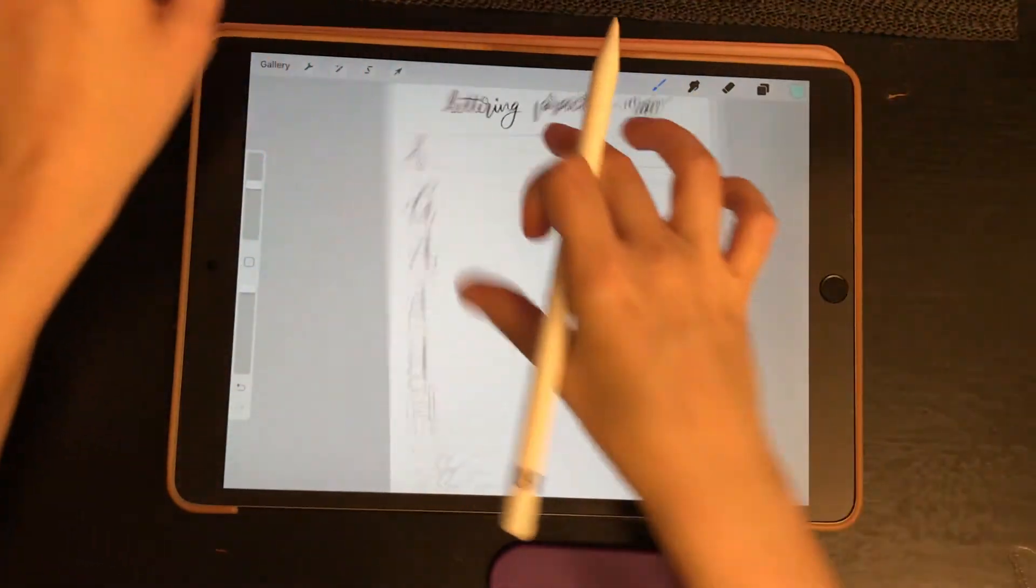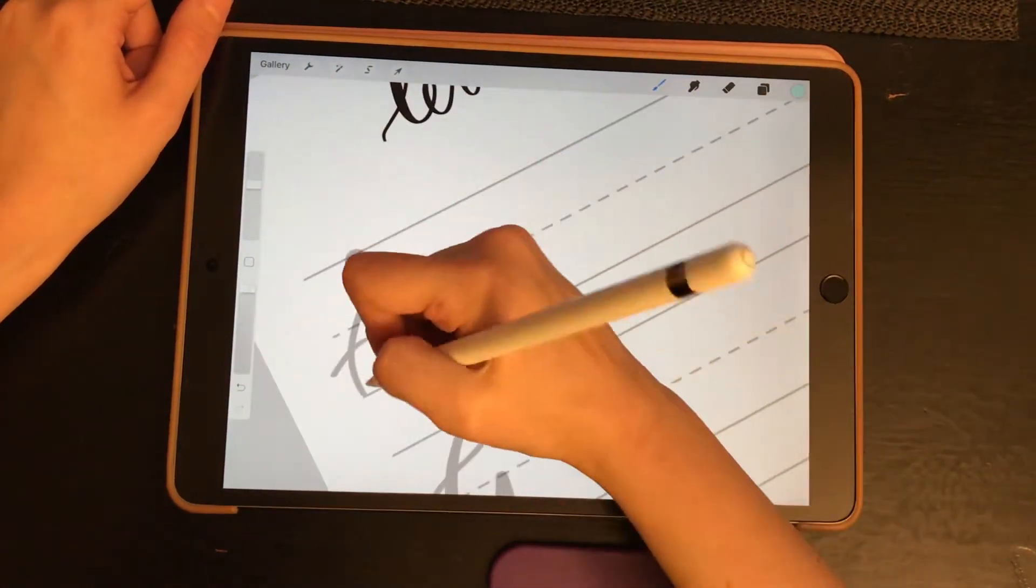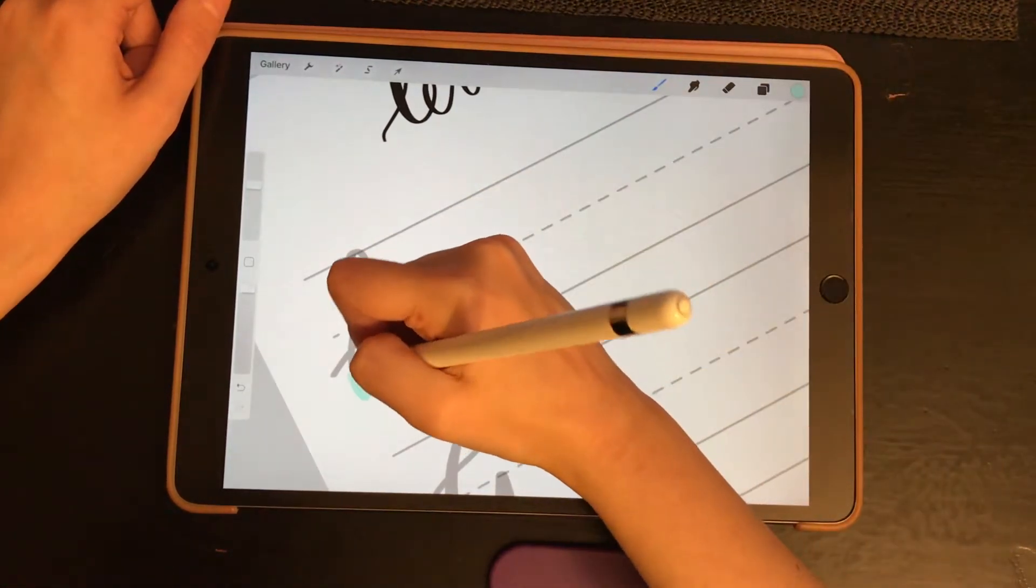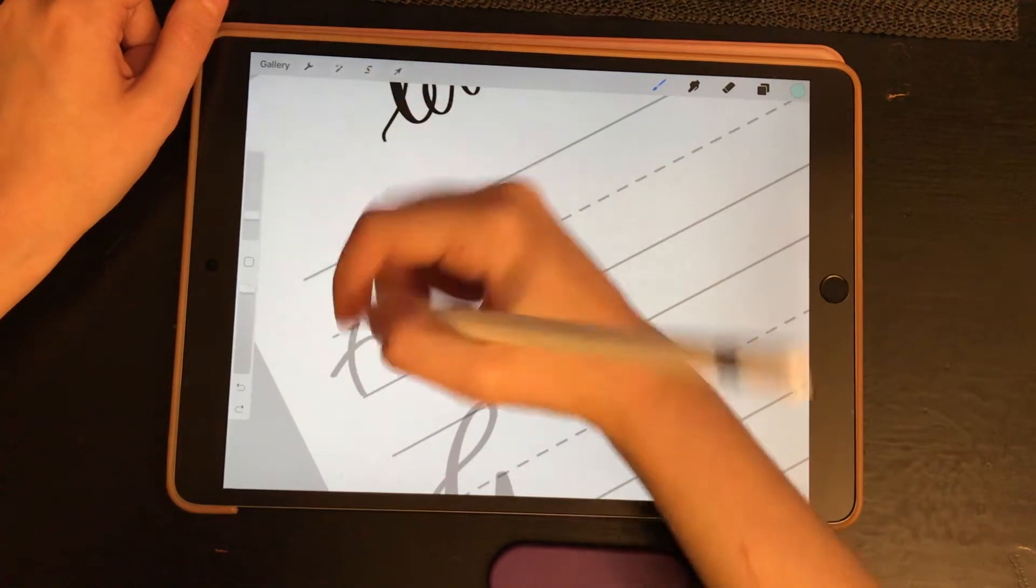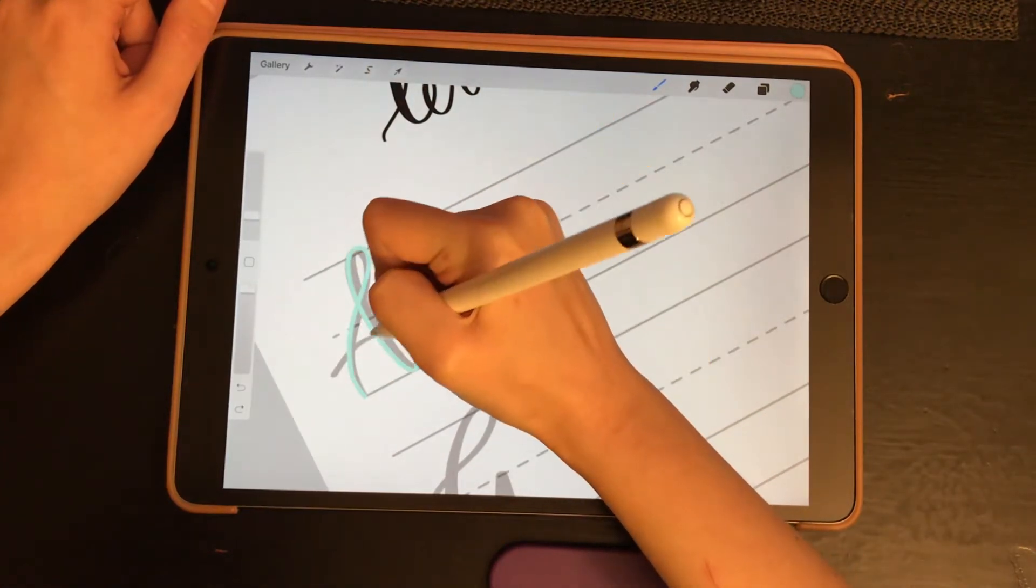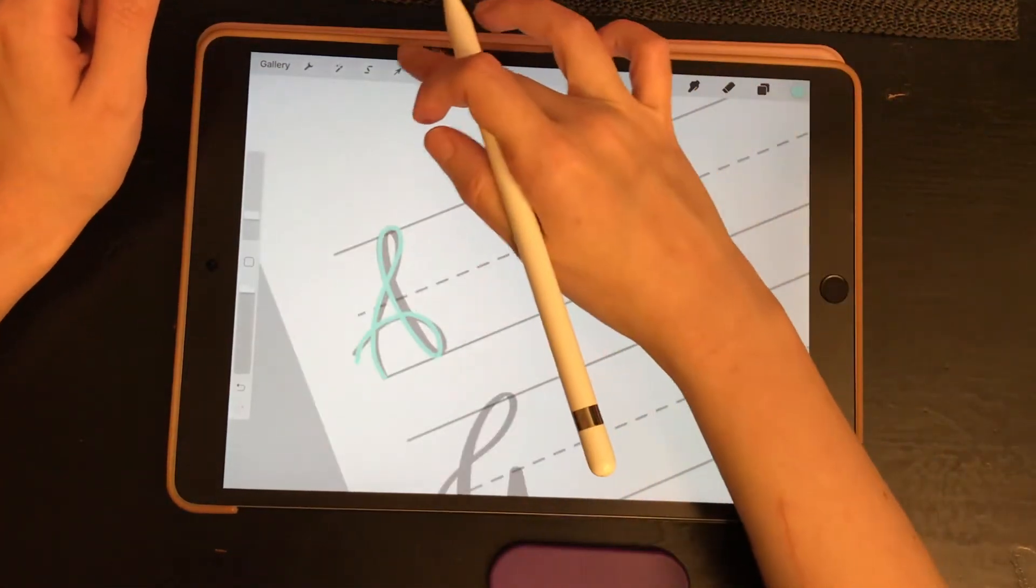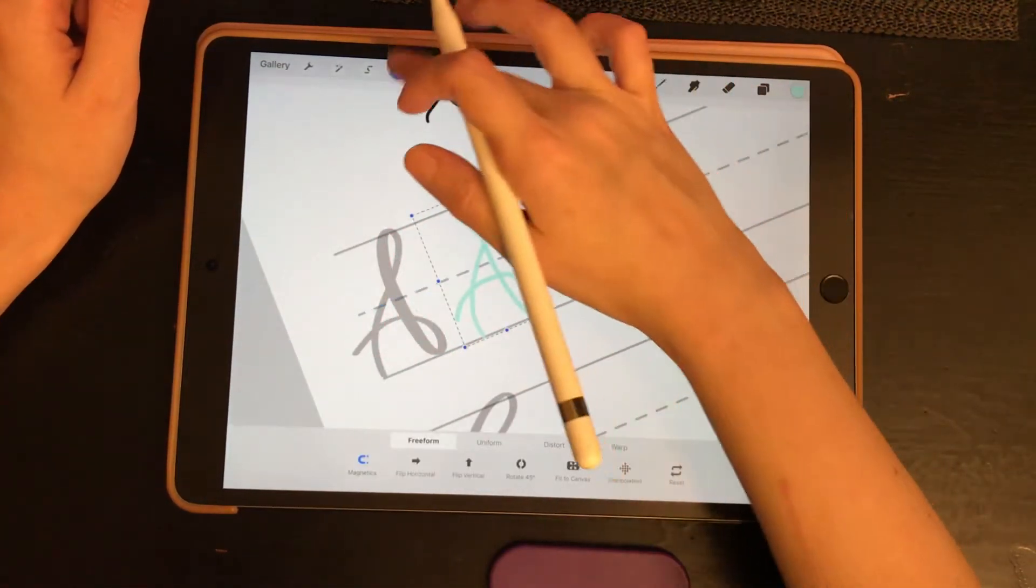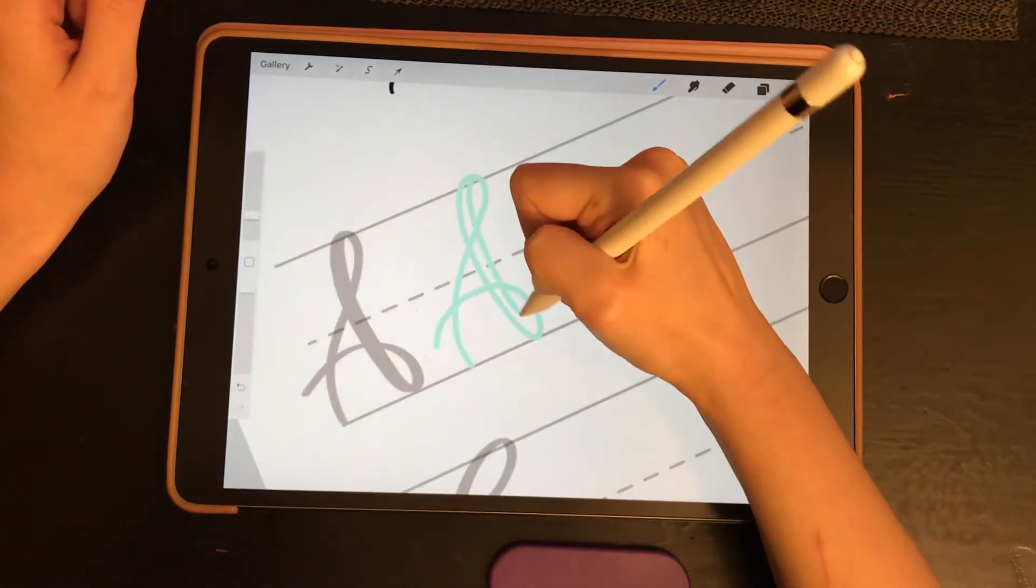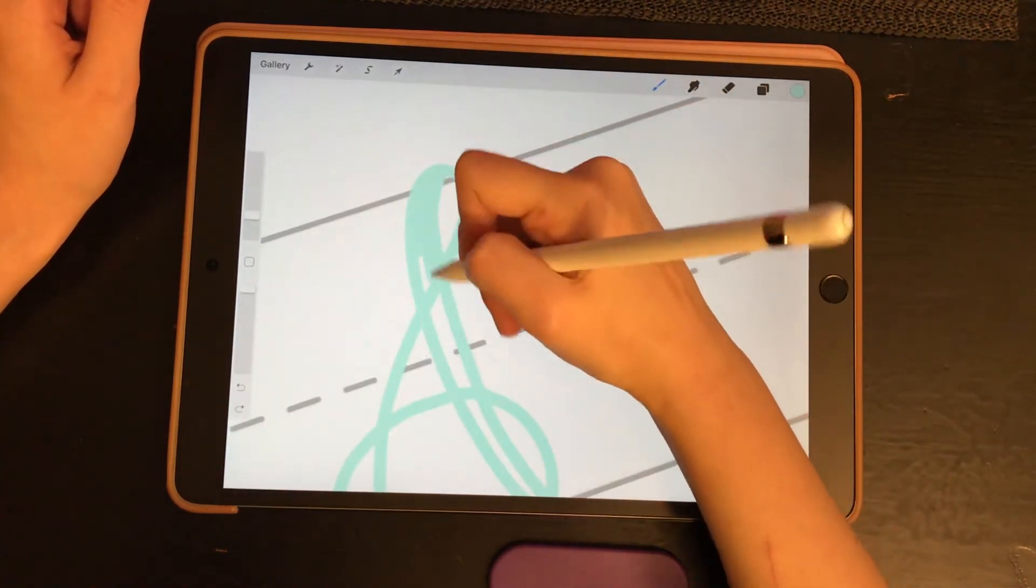Or you can even use just a normal pen with a super duper fine nib right there and practice some faux calligraphy. So we can kind of do, make sure I'm on that writing layer, bring that down. If you are using a fine nib you can do faux calligraphy.